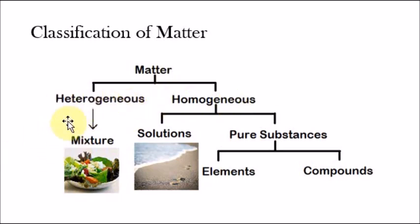Let's first talk about heterogeneous matter. Heterogeneous matter are typically mixtures, and in heterogeneous matter we can see the individual parts that make up the whole substance. For example, salad could be considered heterogeneous matter because you can see the individual parts. You can see the carrots, the lettuce, the tomato. So heterogeneous matter are essentially just mixtures where you can see the individual parts.